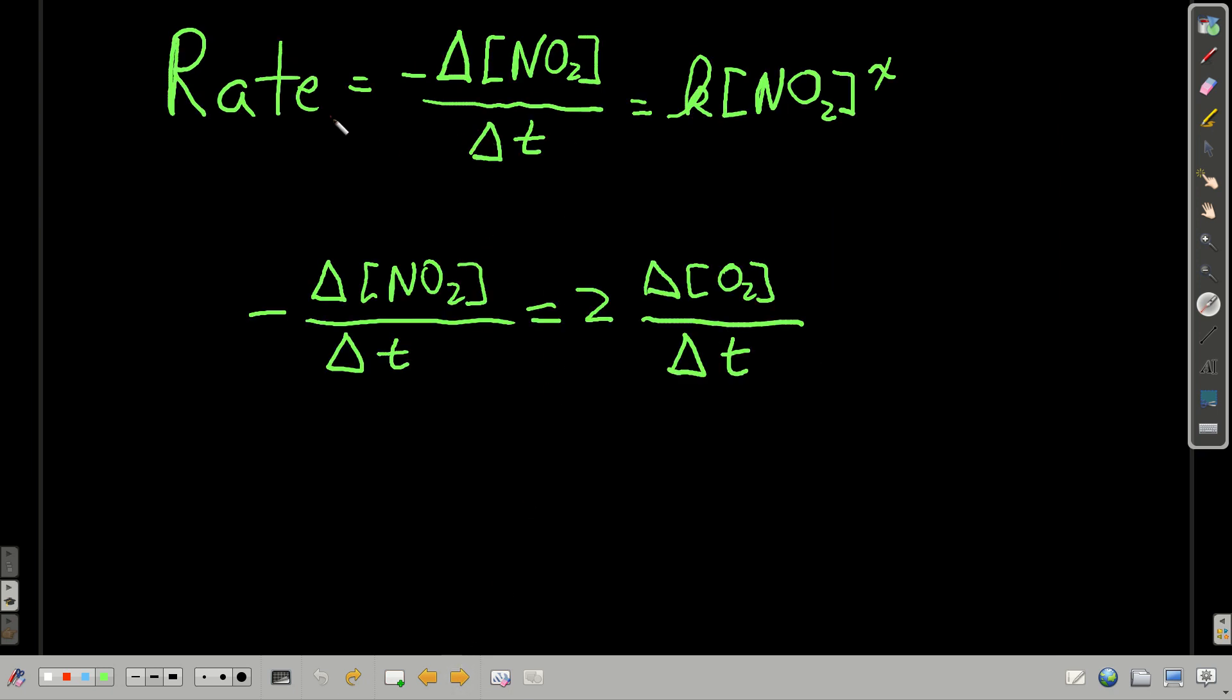Now, remember we said that the rate could be, we could write it as the negative change in the concentration of the reactant over the change in time. We also said it's equal to, remember the negative here is because it's a reactant, so it's disappearing, its change in concentration is negative. This makes it a positive rate. And we could also set it equal to K, concentration of nitrogen dioxide raised to the power X.